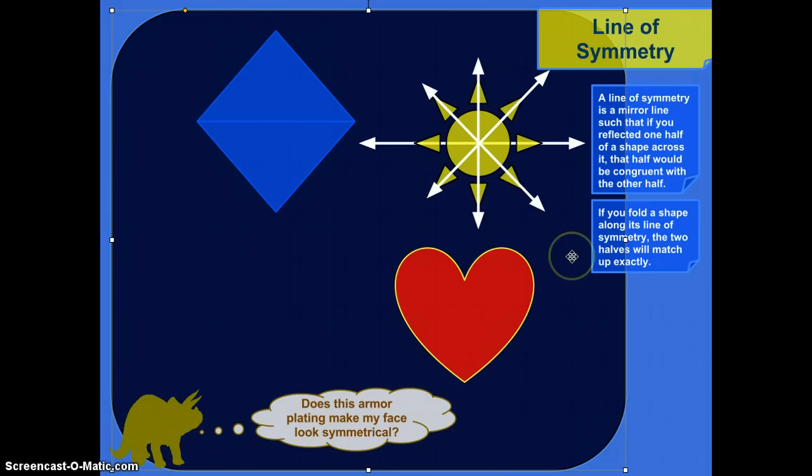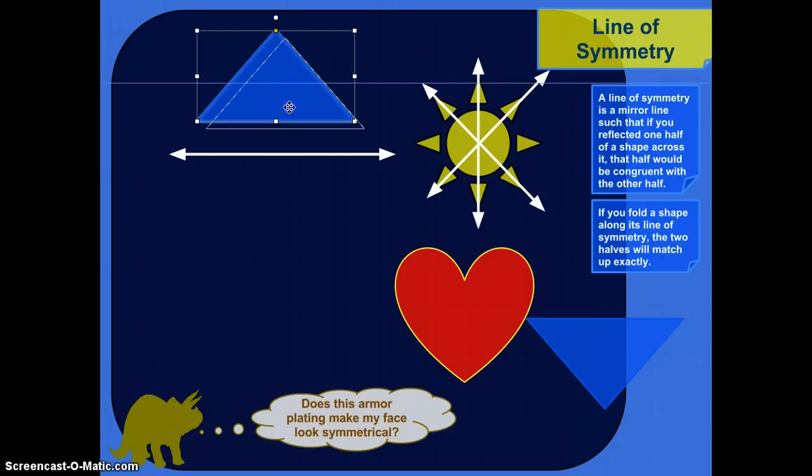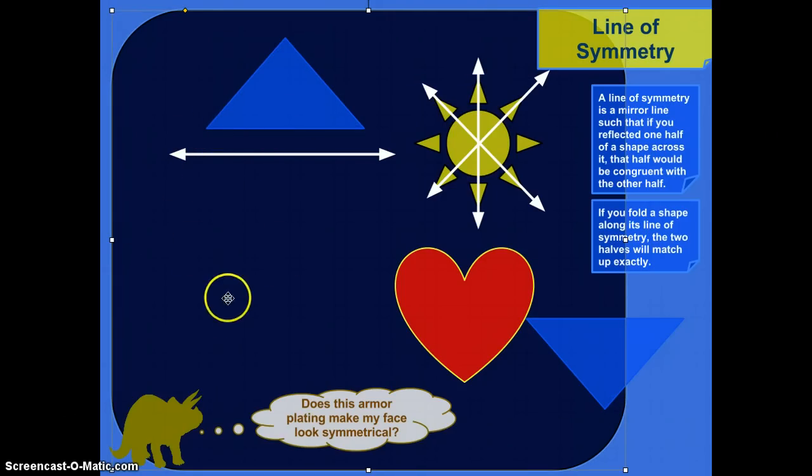So, lines of symmetry are, we could say, a very specific form of a mirror line, as we talked about in the lesson with reflections. In reflection, you could take a mirror line, and the corresponding points of the shape would be an exact distance, the same distance from that mirror line.